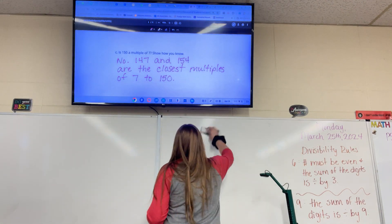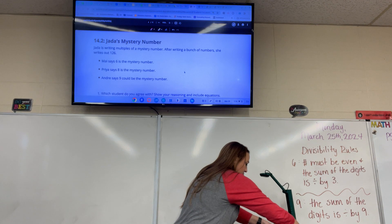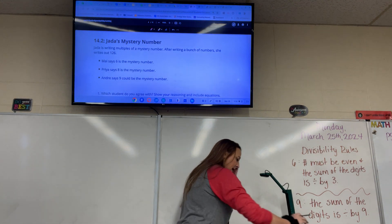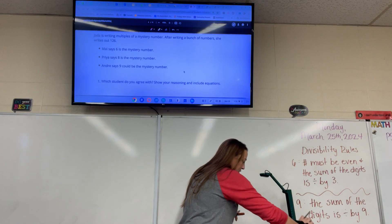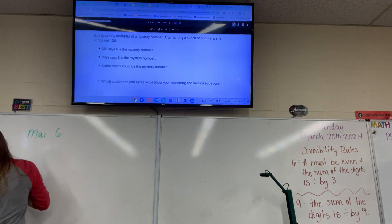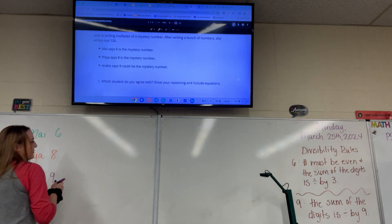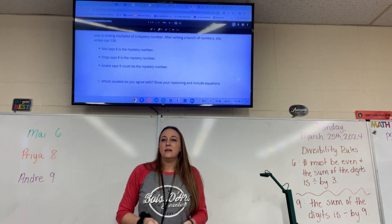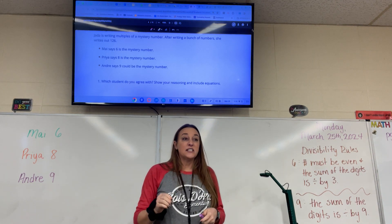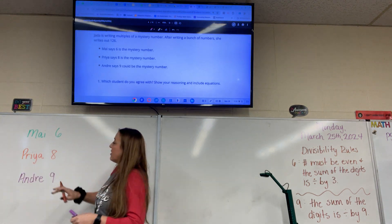One more page on this lesson. Jada is writing multiples of a mystery number. After writing a bunch of numbers, she writes the number 126. So Mya says the mystery number is 6, and then Priya says the mystery number is 8, and then Andre says the mystery number is 9. We have to figure out who is right. And I can tell you just by looking at 126 that Mya and Andre are both right.